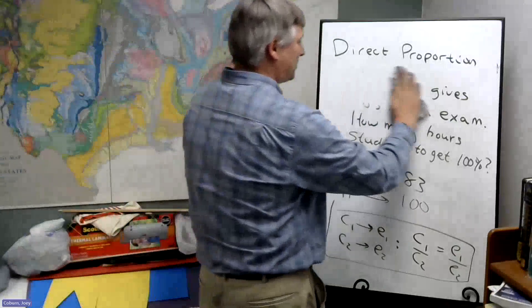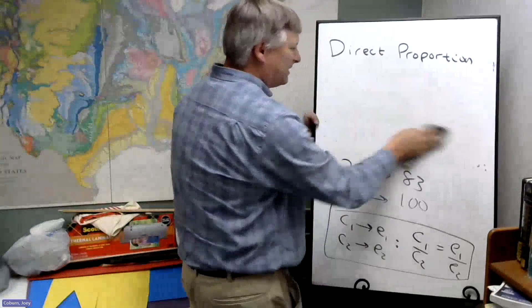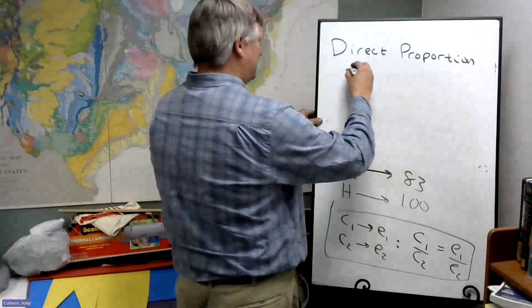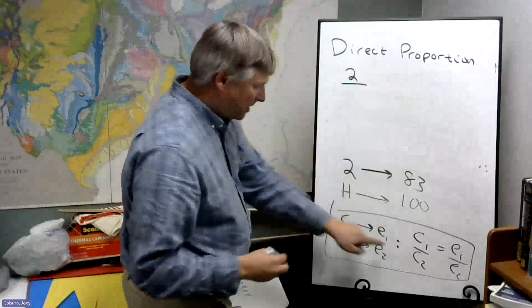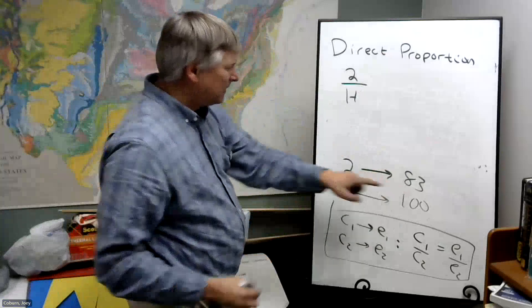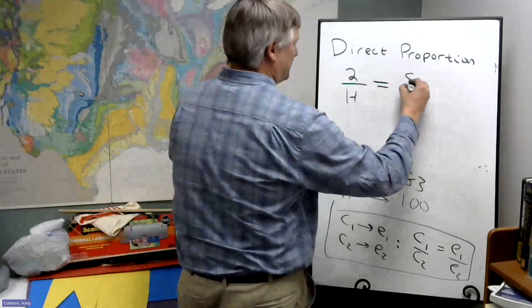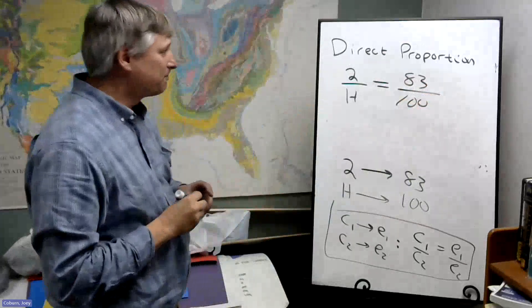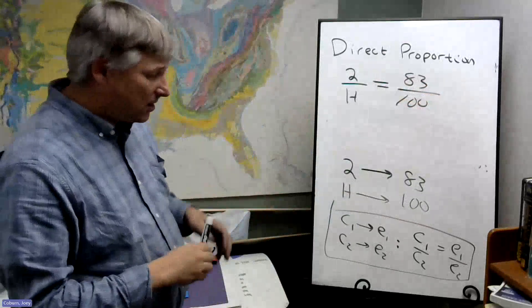All right, so let's solve this question. For cause one, we'll call that two. Cause two is the hours we don't have. This one is effect one, and this is the desired effect two. So how do we solve this?